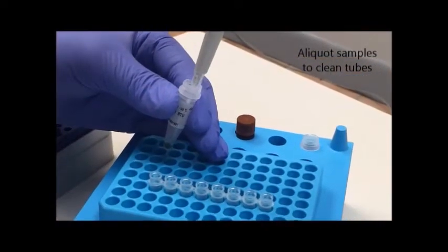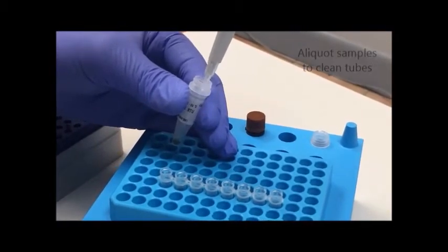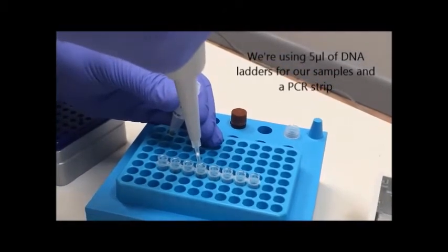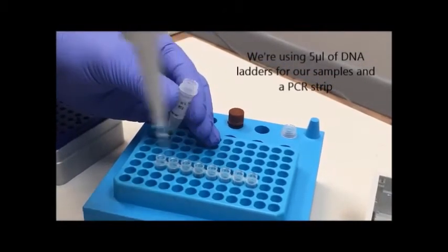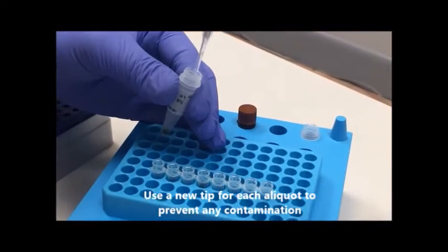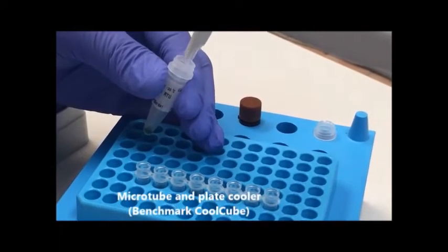The reagents we are using for this demonstration are two different types of DNA markers and some DNA stain. Here we are going to pipette 5 microliters of our DNA marker into clean tubes. In this case, we are using a PCR strip so we have 8 tubes to work with.